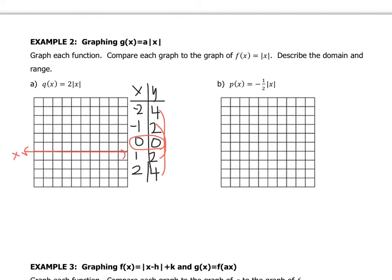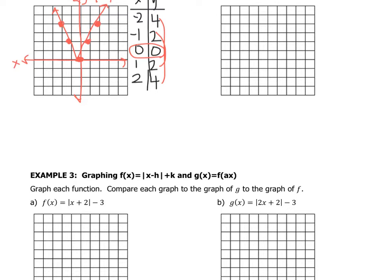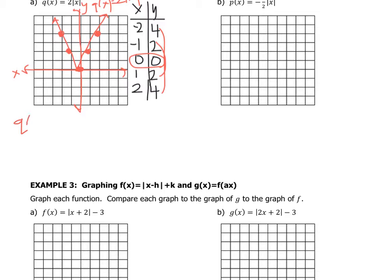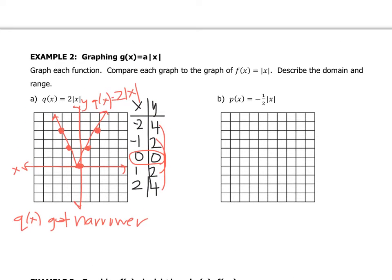Make the XY grid and plot the points: (0, 0), (1, 2), (2, 4), (−1, 2), (−2, 4). You can see the graph got skinnier. Using language from earlier in this chapter, you might say the slope of the portions got steeper — but you can just say it got narrower. So q(x) got narrower. When there's a coefficient greater than 1 in front of the absolute value, the graph will get skinnier or narrower.